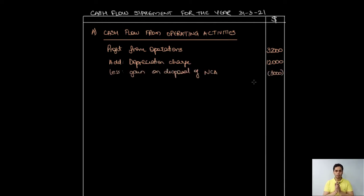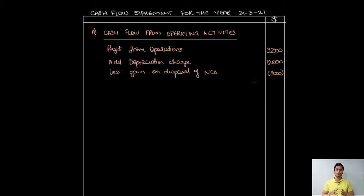An important point where many students get confused: they ask why depreciation is added back if it's an expense, and why the gain on disposal is subtracted if it should be added. Understand that in step two we are reversing the effect of non-cash items. Since depreciation was deducted earlier in the profit calculation, we add it back. Since the gain on disposal was added to profits earlier, we deduct it now. On a cash flow statement, any effect of non-cash transactions must be removed.